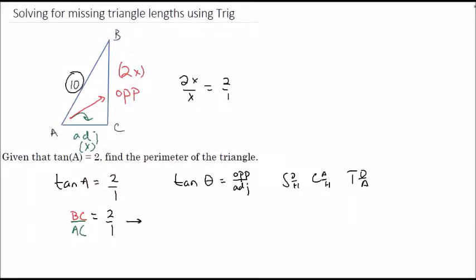Now that we have the ratios set up, we can apply the Pythagorean theorem: (2x)² plus x² equals 10². That's leg 1, leg 2, and the hypotenuse.